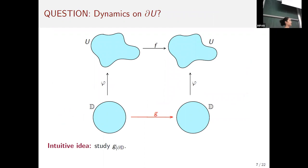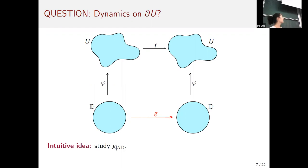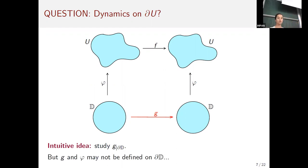Now that we know how the dynamics act inside the Fatou component, we address the main question of this talk: what are the dynamics on the boundary of U? One might think that, just as we study f inside the unit disc to understand the Fatou component, we can study f on the boundary of the unit disc to learn about the boundary of the Fatou component. But this has problems: g and φ may not be defined on the boundary of the unit disc.